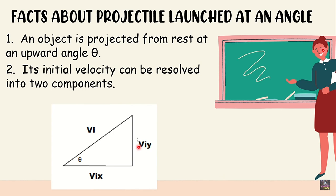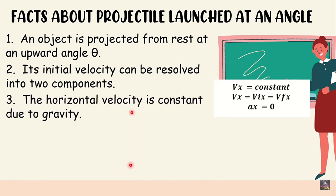Remember, our projectile moves both horizontally and vertically, so its velocity can be resolved into two components. Next: the horizontal velocity is constant due to gravity — just like in a horizontally launched projectile, the horizontal velocity is constant and it is not changing.